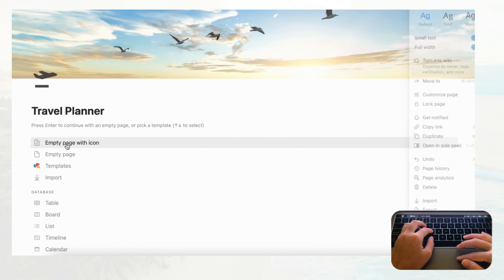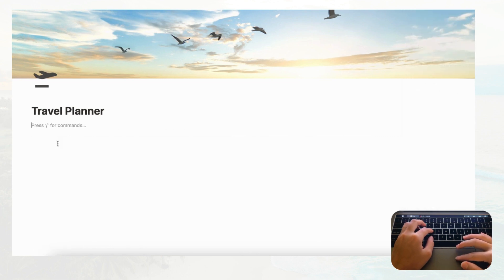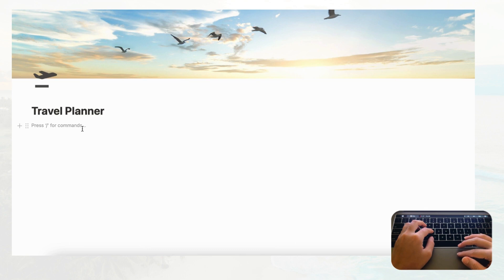Now let's start planning. We're going to create two databases: one for your travel destinations and another for your travel itineraries, and eventually we're going to link the two together. Let's first create a travel destinations database by typing slash and then 'database.'